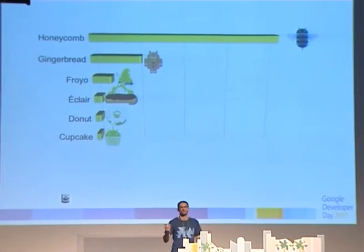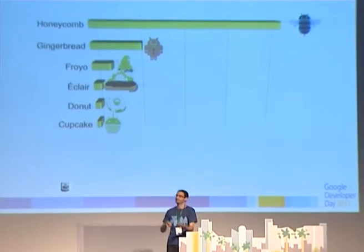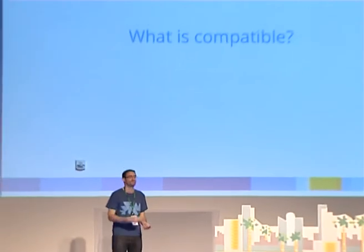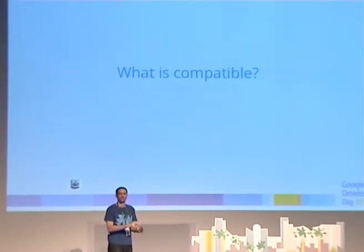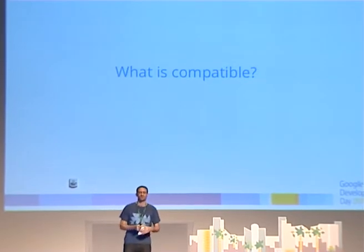How can you write a single application which runs on 550 different devices with different screen sizes, different GPS, cameras, and things? And of course, you use the Android framework — it's what it's there for. You have resources, layouts, and these things. But what is it that makes the Android framework work on all of those devices? They'd have different chipsets, different screens, all these things. Does anyone know how we ensure that the Android framework works on those devices?